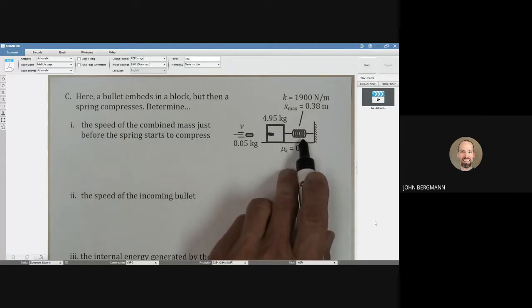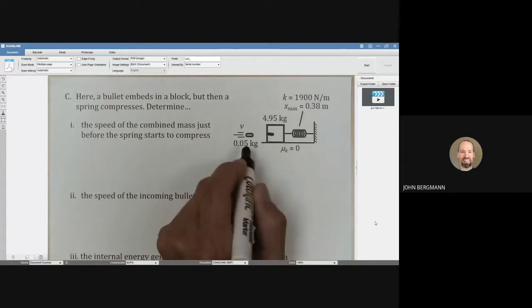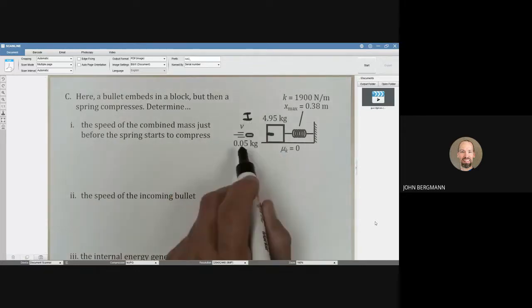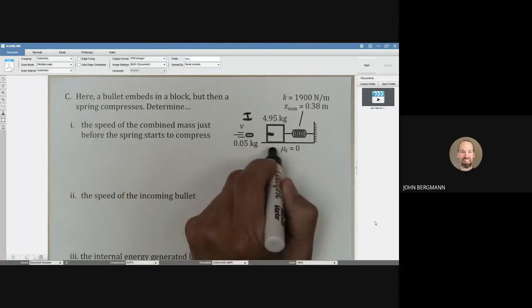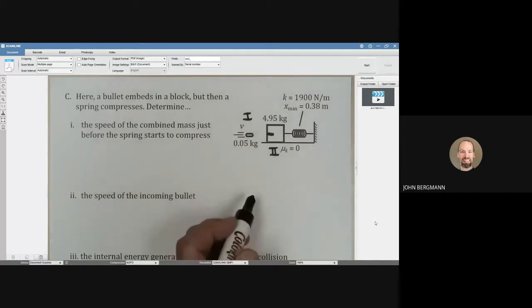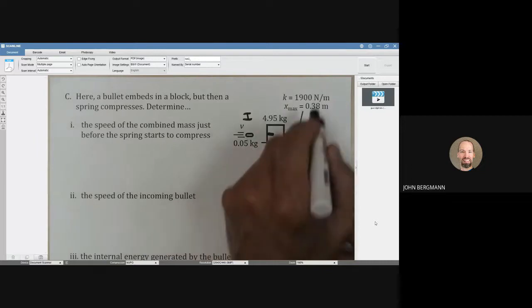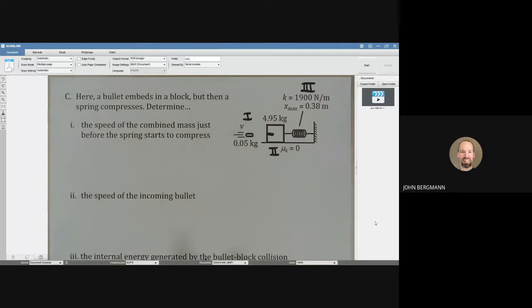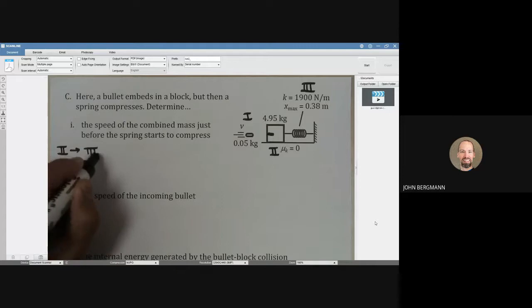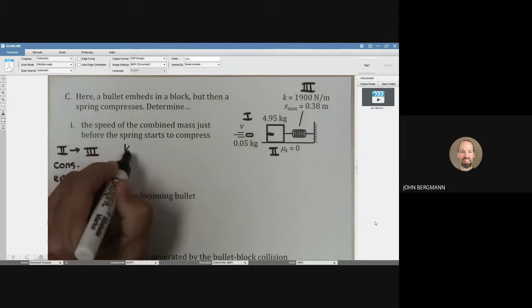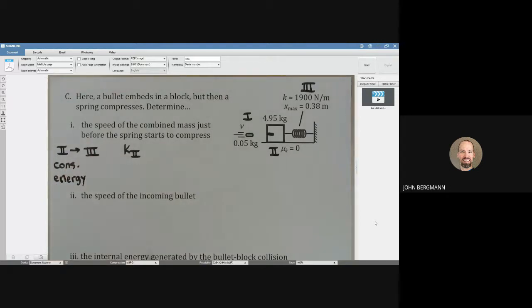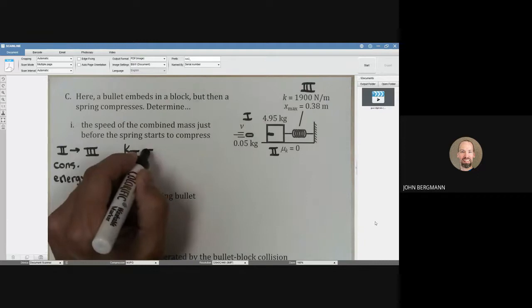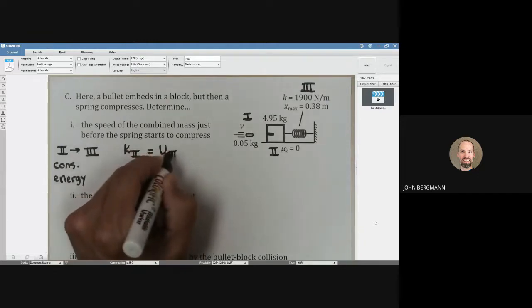So this block slash bullet is going to have kinetic energy, which is going to be converted entirely into elastic potential energy as this spring compresses. This is case one here, the bullet by itself. This is case two when the bullet just slams into the block, and then when the spring is fully compressed, let's call that part three. So we're going to go between parts two and three here, and we are going to conserve energy. The kinetic energy right there at the beginning of part two is going to turn into the elastic potential energy of part three.